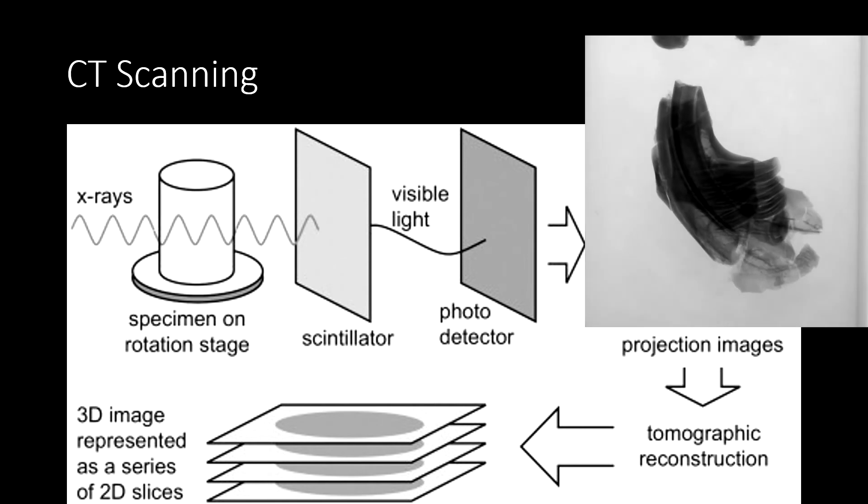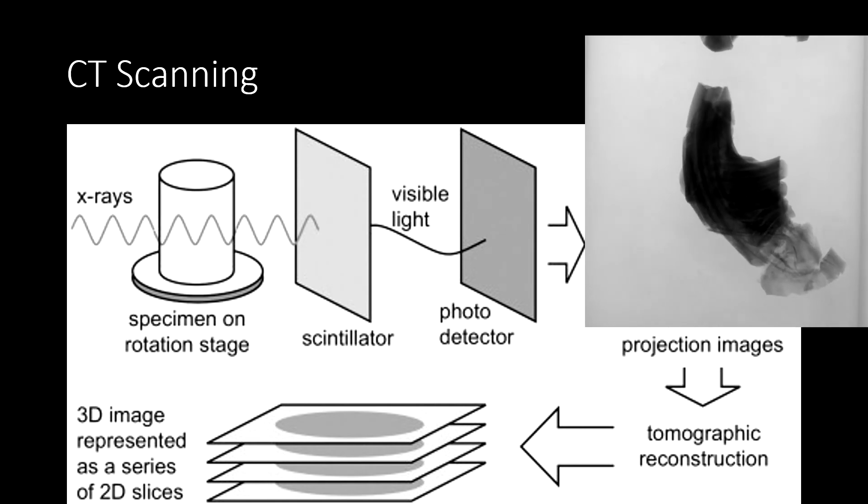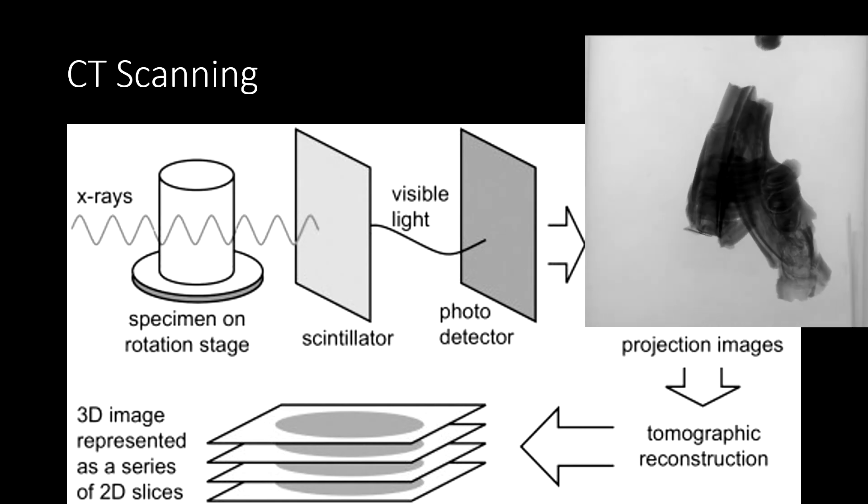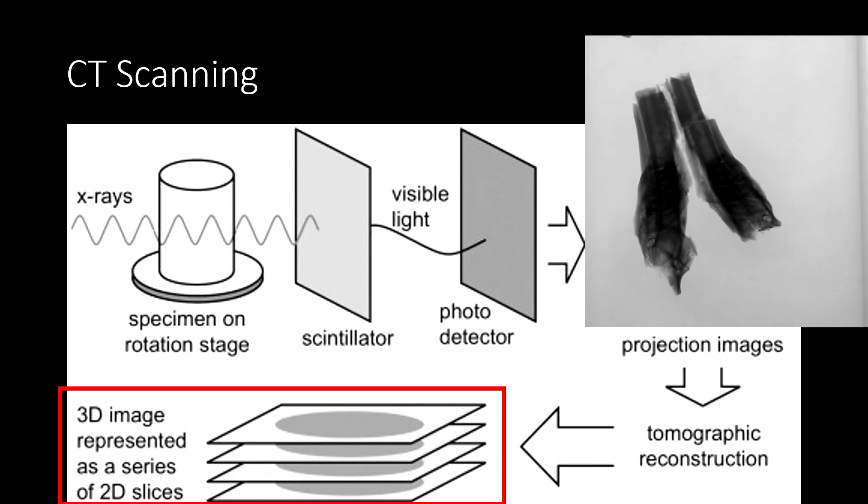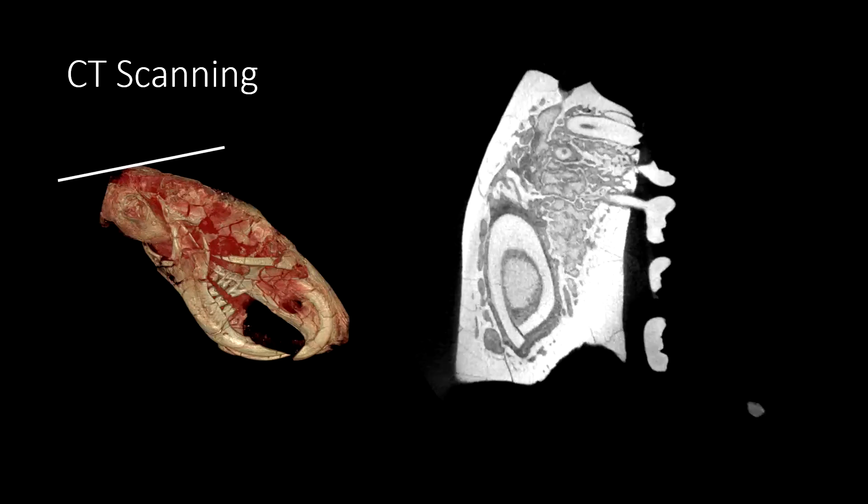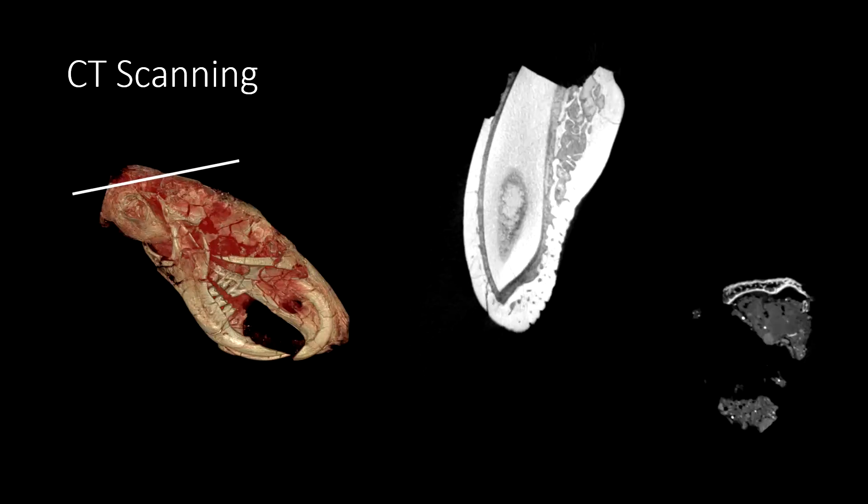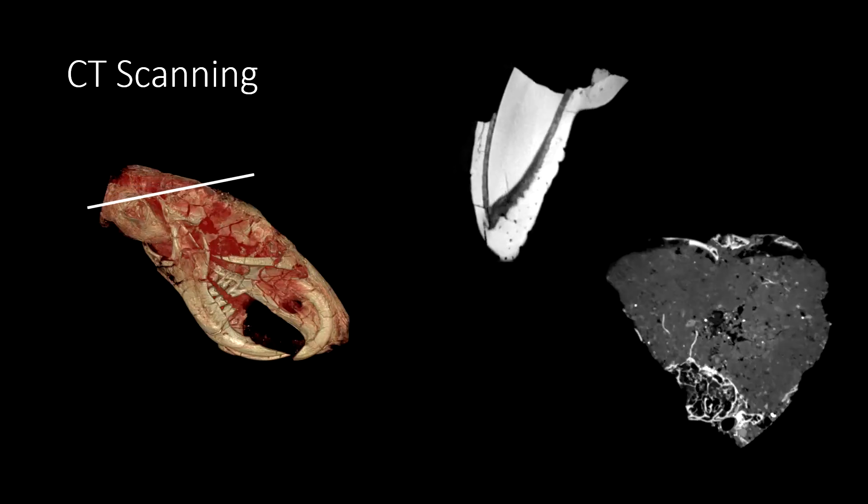This raw data is then converted into a 3D volume, which is represented as a series of 2D slices through the object. An example of one of these slice stacks is shown here.